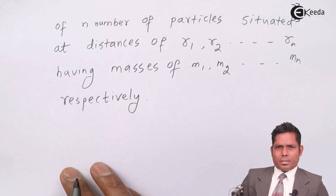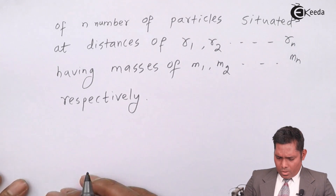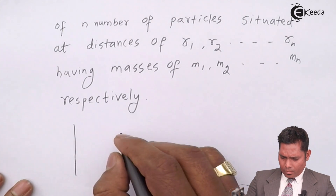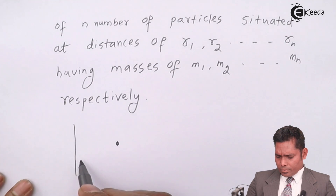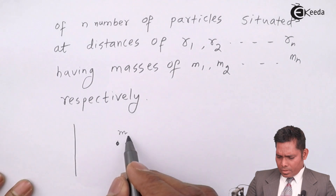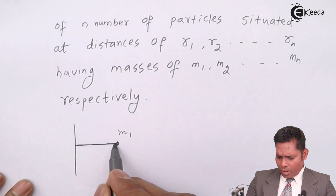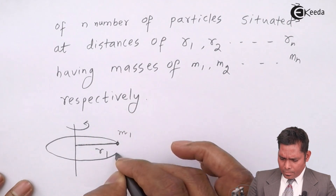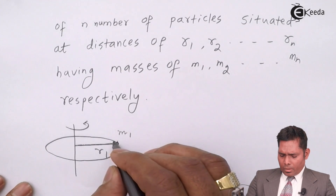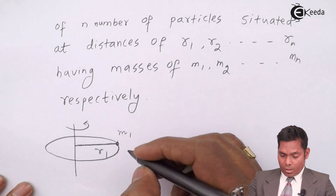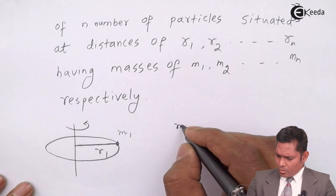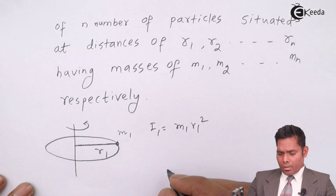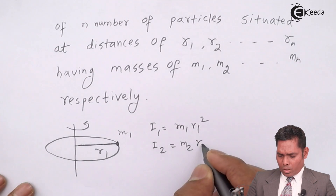The moment of inertia of a single particle is m r squared. So the moment of inertia of a particle of mass M1 at a distance R1 — if that particle rotates around the axis — is M1 R1 squared. That is I1 for the first particle. Similarly, for the second particle it will be M2 R2 squared.